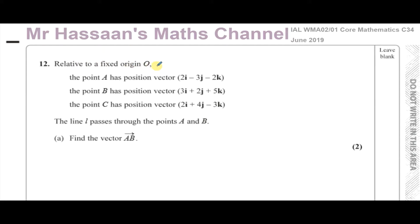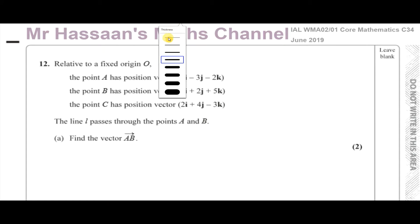In this question we're told that relative to a fixed origin O, the point A has position vector 2i minus 3j minus 2k, the point B has position vector 3i plus 2j plus 5k, and the point C has position vector 2i plus 4j minus 3k. The position vector means the vector from O to that point.